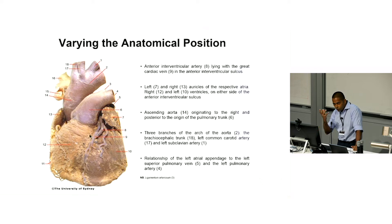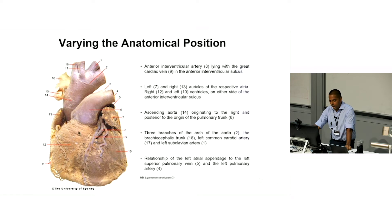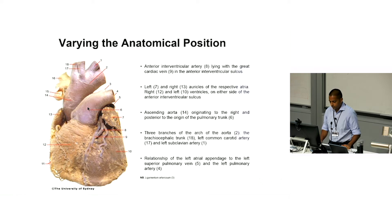If you turn the heart in that direction, you'll see a bit more of the left atrium and the left atrial appendage, which is really the only part of the left atrium that protrudes forward. Also notable is how the pulmonary trunk is anterior to the aortic root and ascending aorta, and that the aorta lies to the right of it — which we'll come to later.